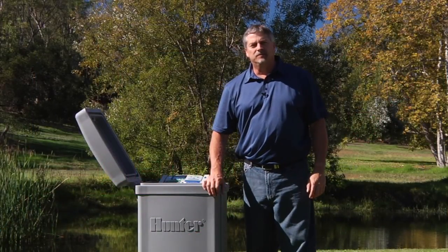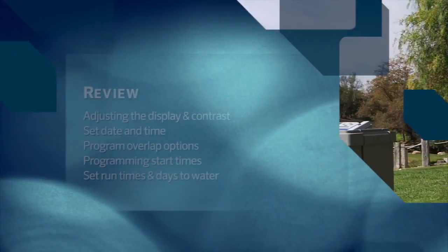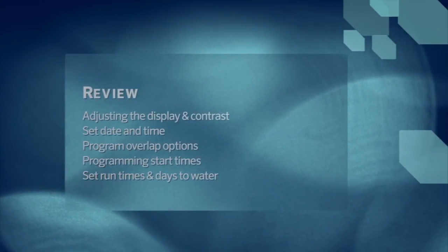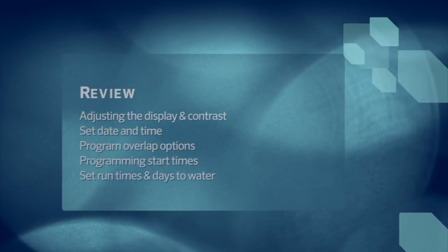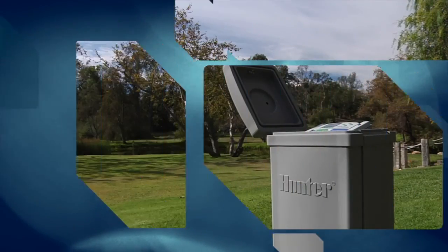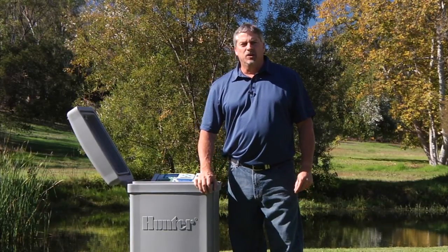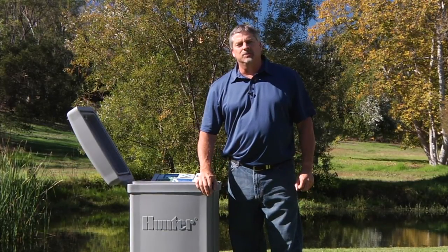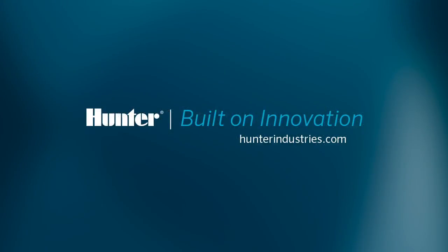This finishes the basic steps for programming a complete schedule. We went over the adjustment of the display contrast. We set the date and time and explained the program overlap options before programming the start times. Finally, we set the run times and explained the different options for days to water. There are many other functions that you can incorporate to customize your watering schedule, and these will be covered in great detail in other videos.